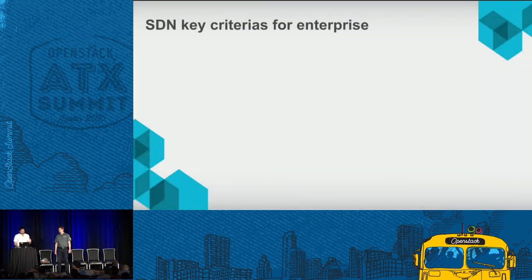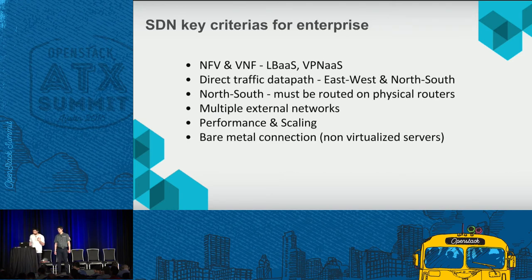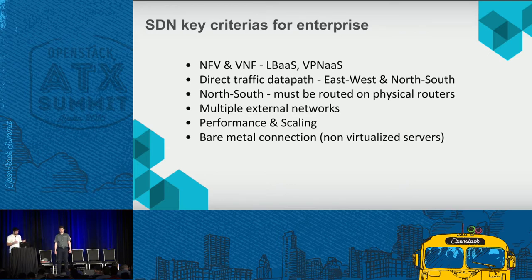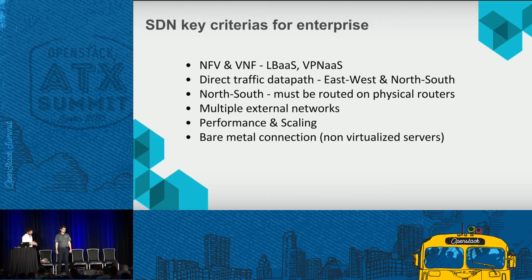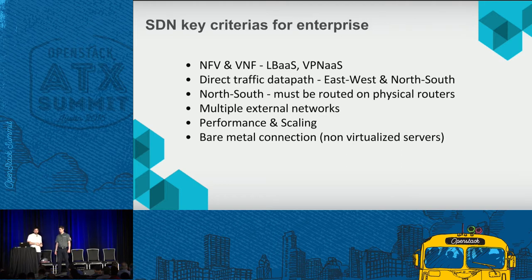Key criteria for enterprises from our point of view: load balancing as a service — is the solution inside? Then direct traffic data path, which was the most critical thing in releases before Juno. Even in Juno, with Open vSwitch the direct data path for north-south required going through a network node. Failure of the network node was a serious problem — when we had it in production we could not sleep because it was very difficult to keep up and running.